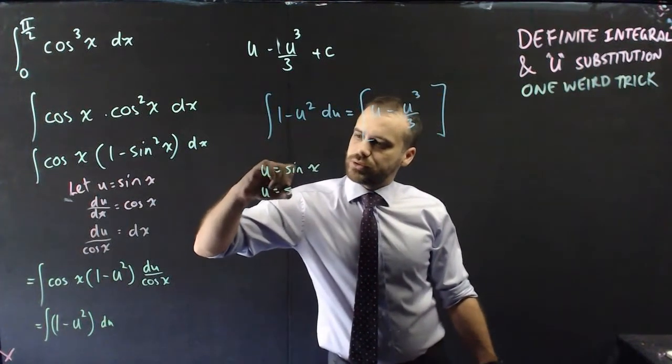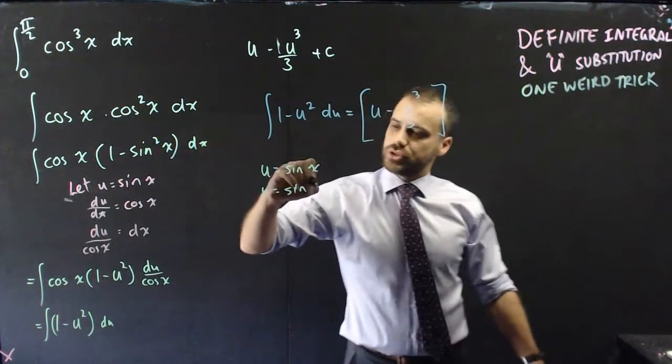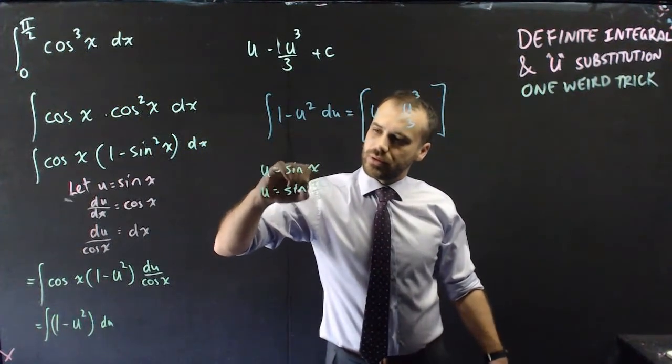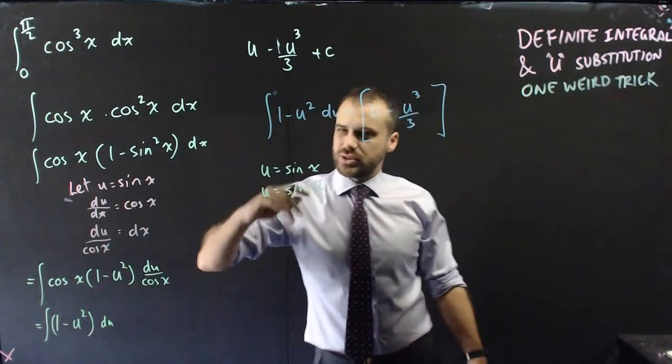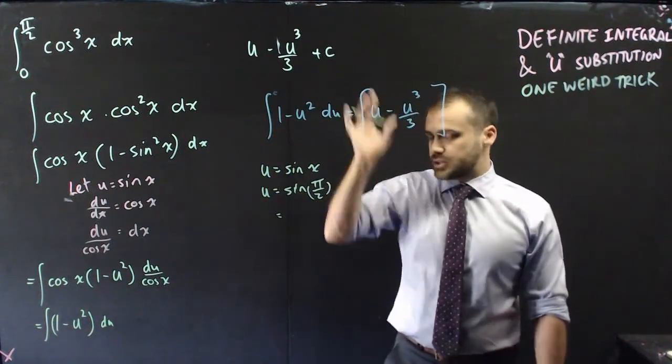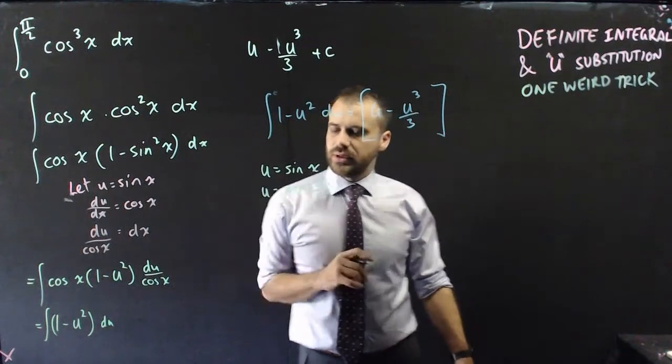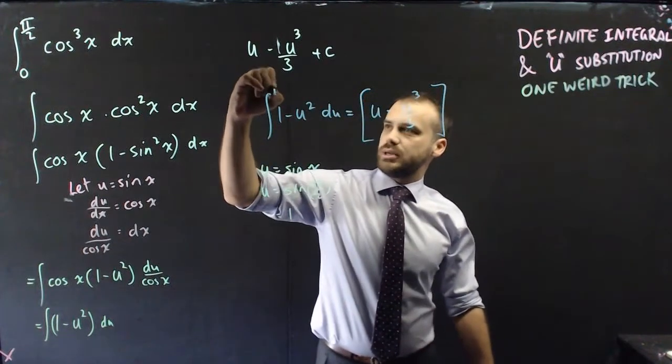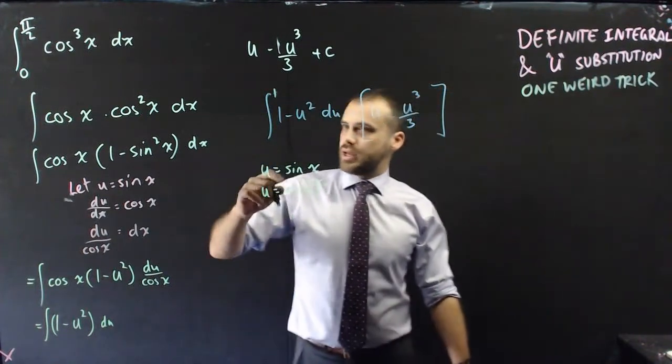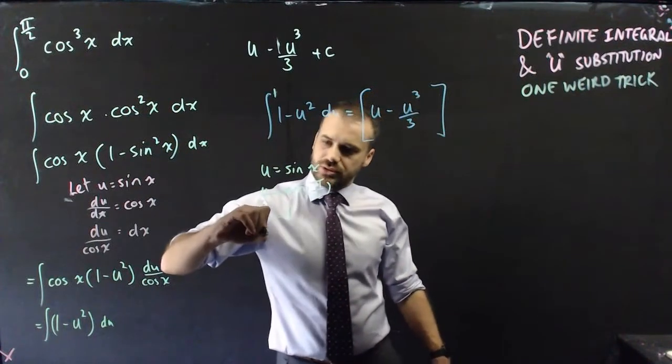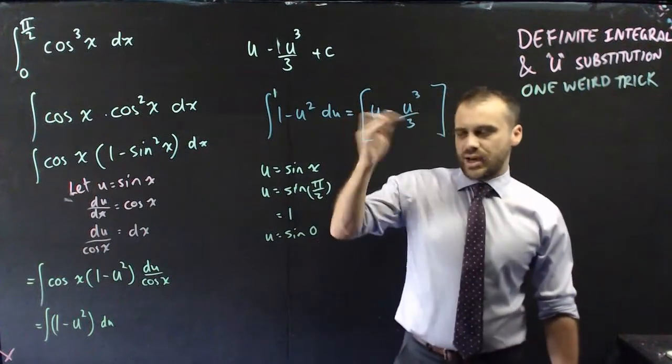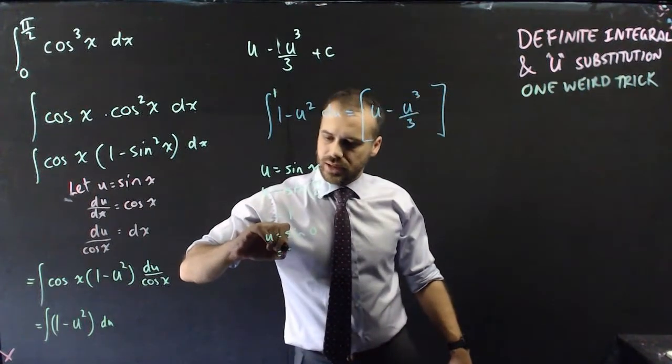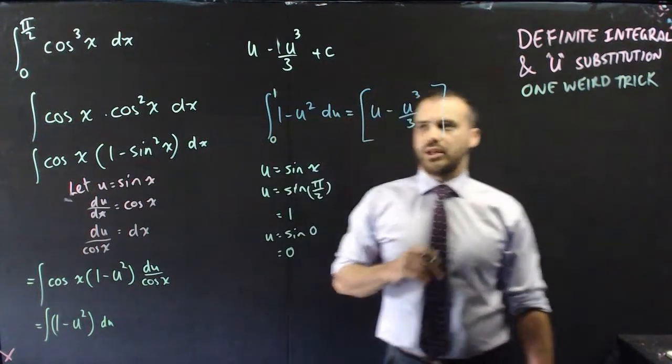So u equals sine pi on 2. That's going to give me my upper terminal here, and sine pi on 2, that's going to be 1. Okay, so my upper terminal here is going to be the number 1, and between 0. So u equals sine 0, and that is 0. So 0 is going to be my lower bound here.